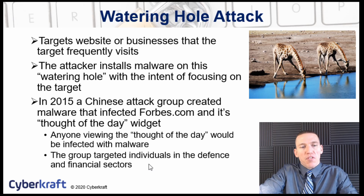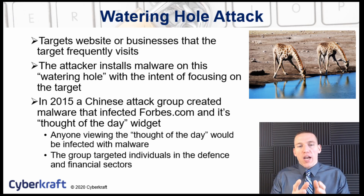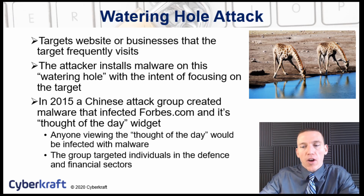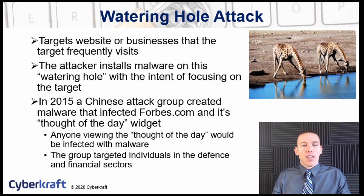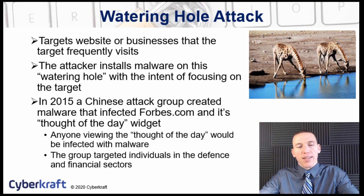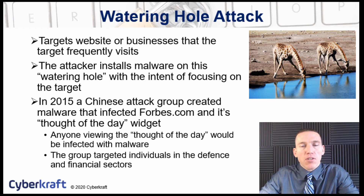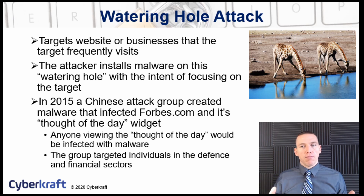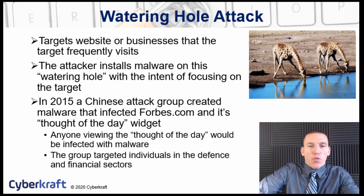Here's a practical example: in 2015, an advanced persistent threat group from China targeted Forbes.com and its 'Thought of the Day' widget. The idea was that this Chinese APT group identified that a lot of defense contractors regularly visited Forbes.com to view that widget. They infected the widget on Forbes.com with the hopes of gathering information on those visitors. It was largely successful, going undetected for many months until it was finally discovered. Instead of targeting the defense contractors directly — who might have their own cybersecurity capabilities — they targeted Forbes.com.